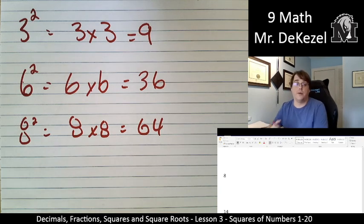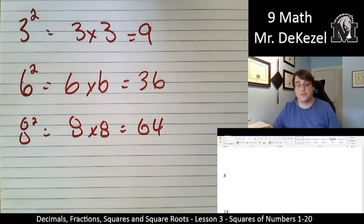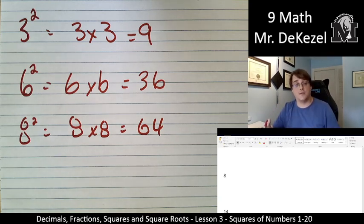So just become familiar with all of these numbers up to 20. 4 times 4 is 16. 5 times 5 is 25. We've got 7 times 7 being 49. 9 times 9 being 81, and so on and so on.